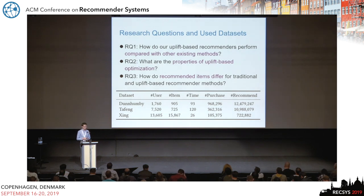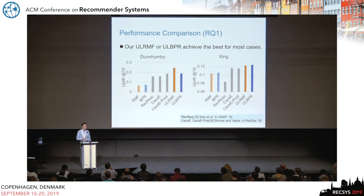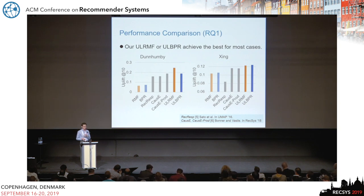In our experiments, we investigated three research questions: comparison with existing methods, properties of uplift optimization, and characteristics of actual recommended items. We use three public datasets. Our UL-RMF and UL-BPR methods achieve the best performance for most cases. The orange and blue bars are UL-RMF and UL-BPR, and the red and blue bars are RMF and BPR. The green bars represent previous methods targeting diversity and coverage.